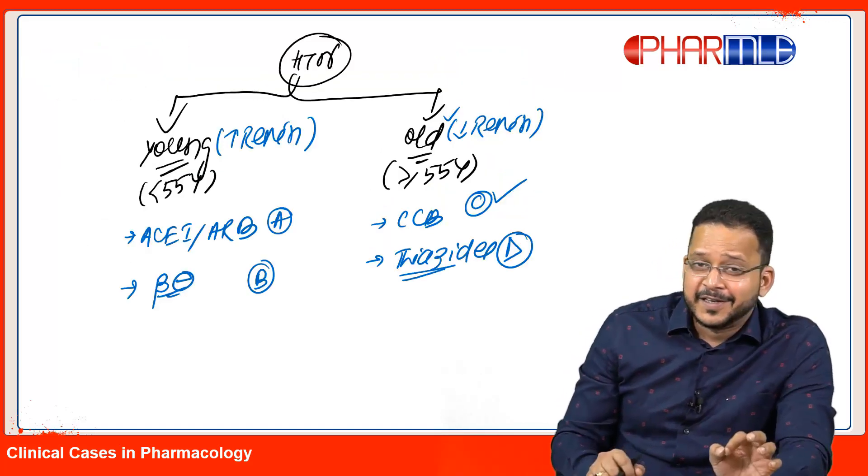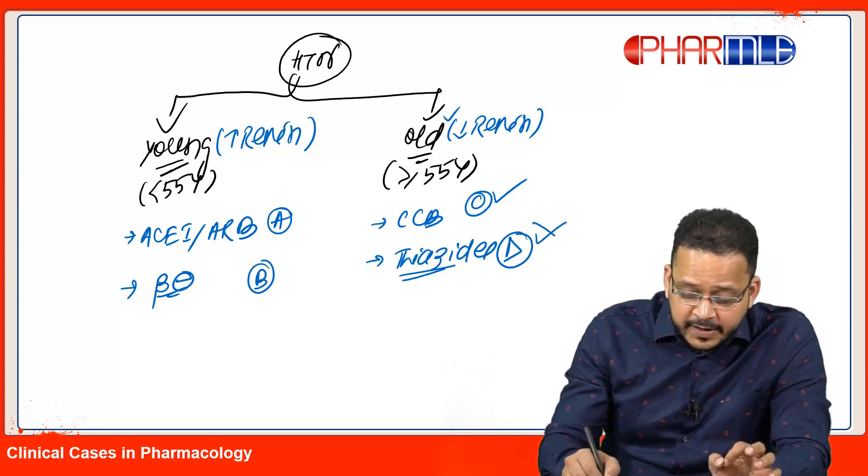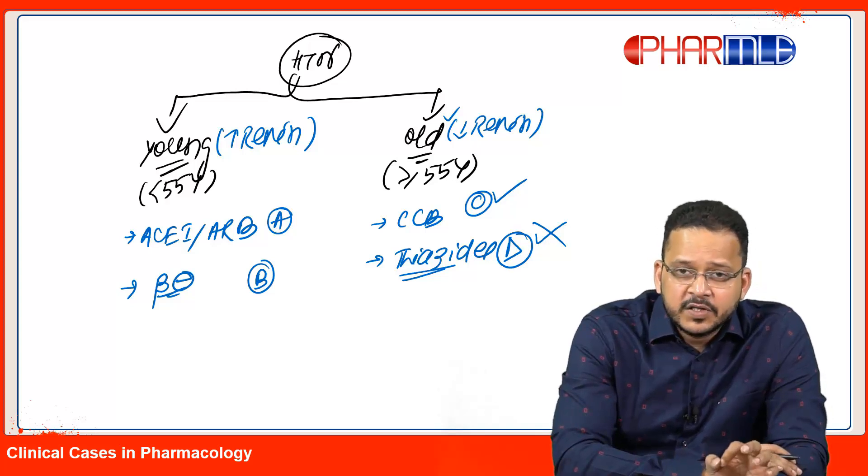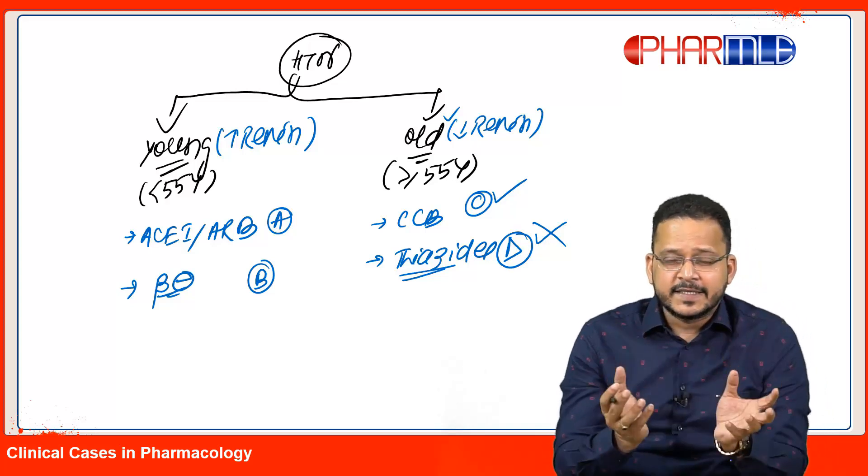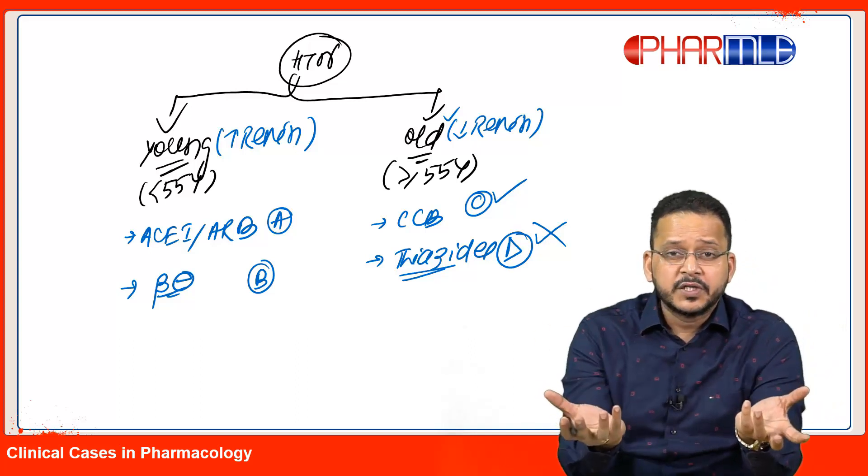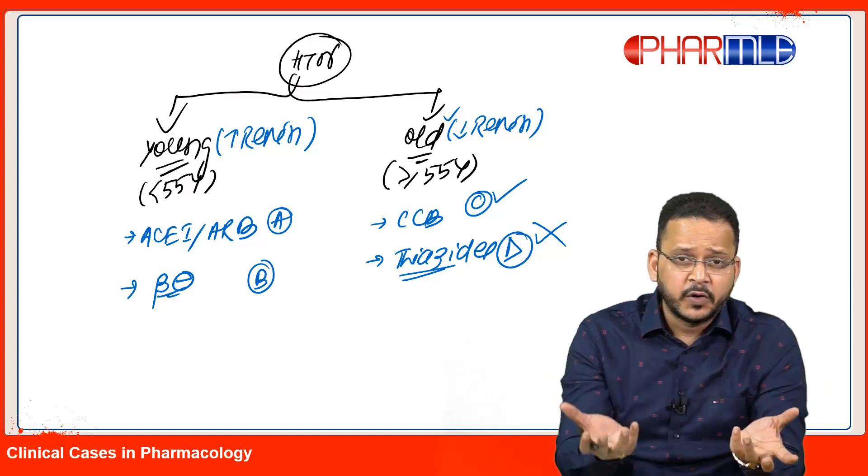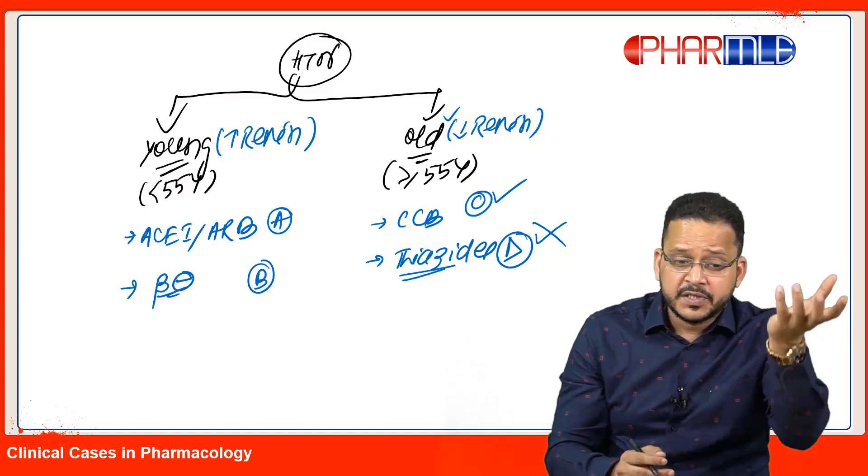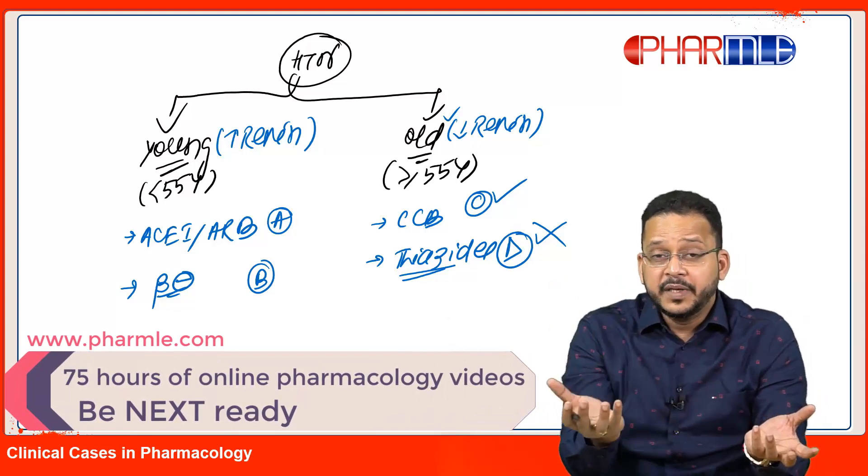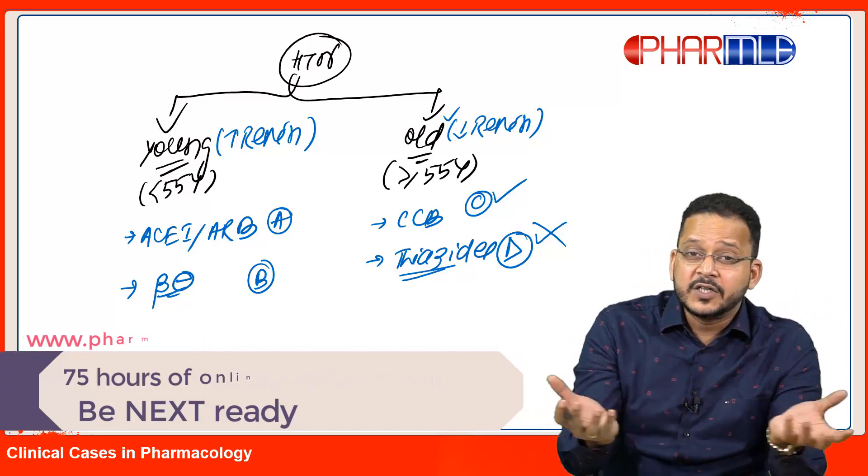If you're thinking the next drug I should combine is thiazides, you are wrong. Thiazides would not be the right answer. See, the basic logic of treatment of hypertension is: start a young patient on RAS drug, start old patient on non-RAS drug. If they are not responding - if a young patient on RAS is not responding, combine a non-RAS drug. If an old patient on non-RAS drug is not responding, combine a RAS drug. That is the logic.